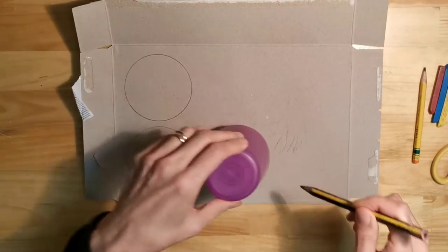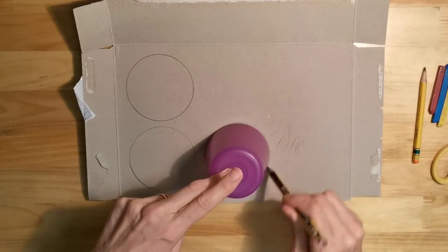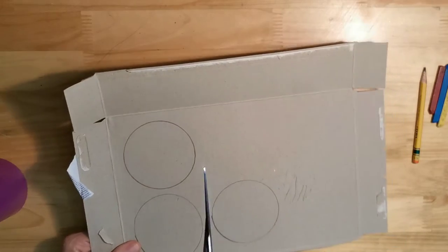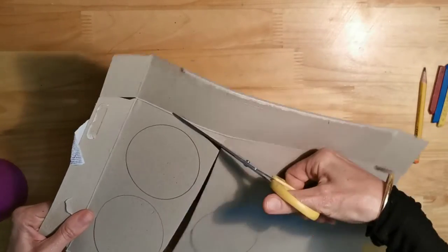First of all, on the inside of the cereal box you want to draw around your circle three times, then get some scissors and cut out your three circles.